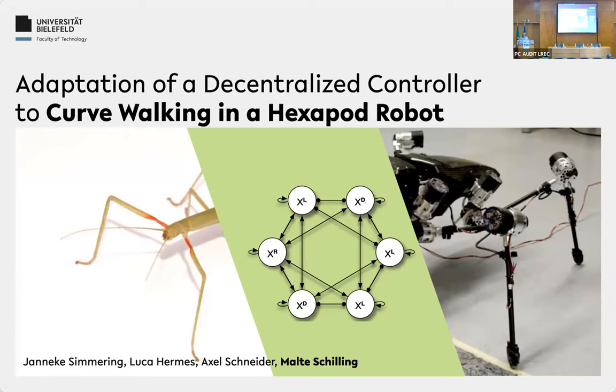Good morning everyone, we are starting the session on planning and control number two. We are starting with a presentation from Malte Schilling with the paper Adaptation of a Decentralized Controller to Curve Walking in a Hexapod Robot.